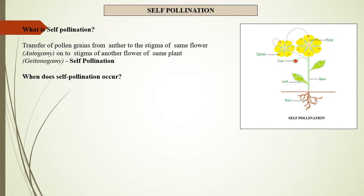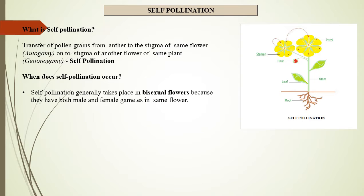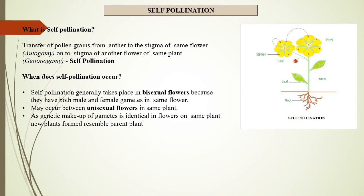When does self-pollination occur? Self-pollination generally takes place in bisexual flowers because they have both male and female gametes in the same flower. It may also occur between unisexual flowers on the same plant. As the genetic makeup of gametes is identical in flowers on the same plant, the new plants formed resemble the parent plant.